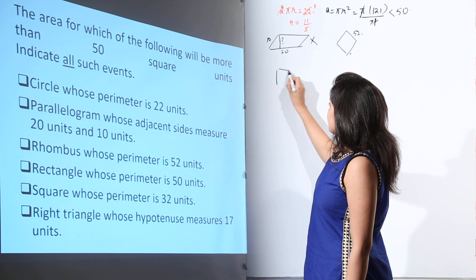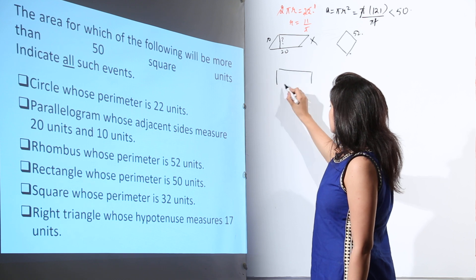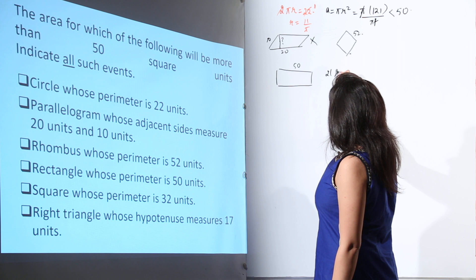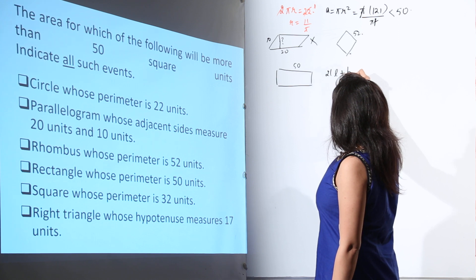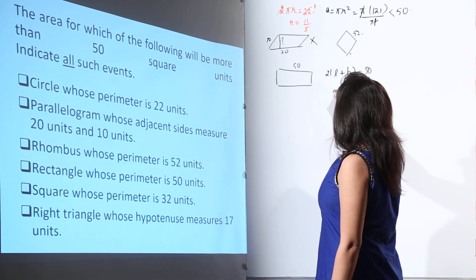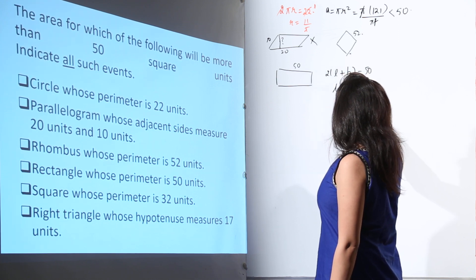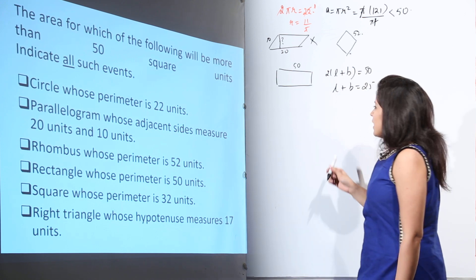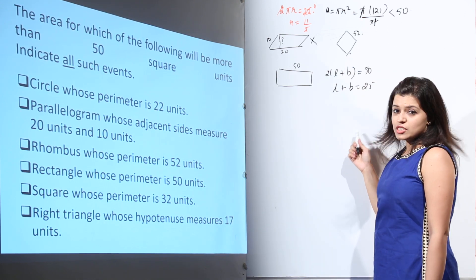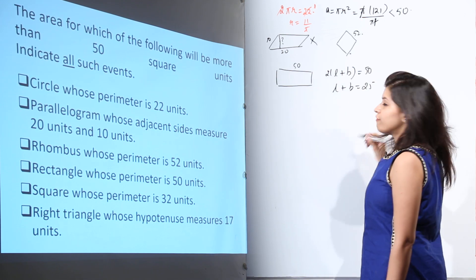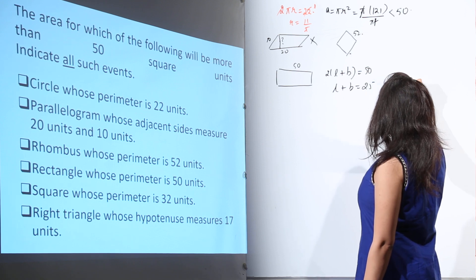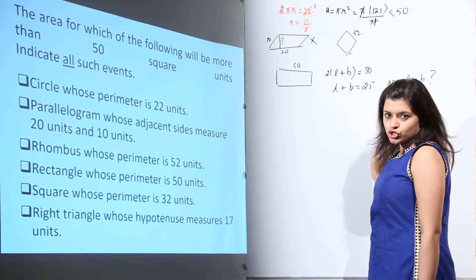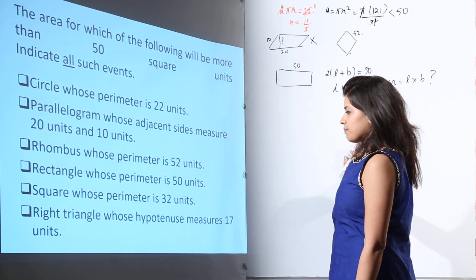Then we have a rectangle whose perimeter is 50 units. That means 2(L + B) = 50, so L + B = 25. We know the value of L + B, but from L + B alone we cannot find the area L × B, so we are not sure what the area in this case will be.